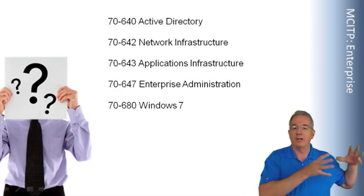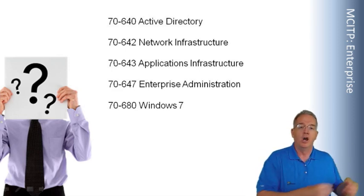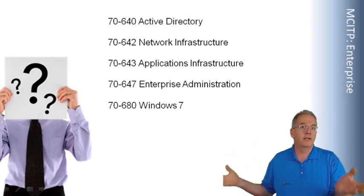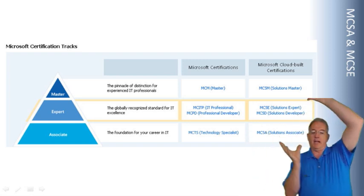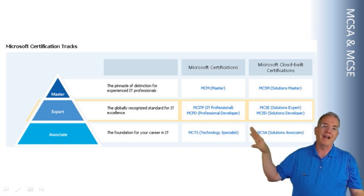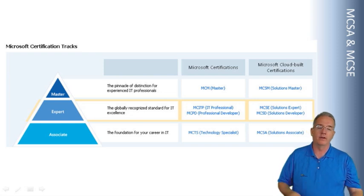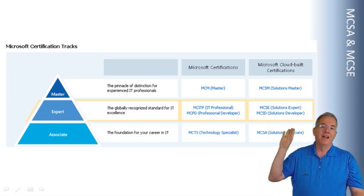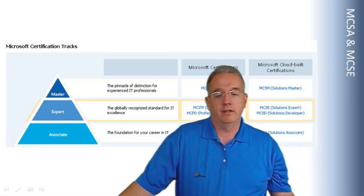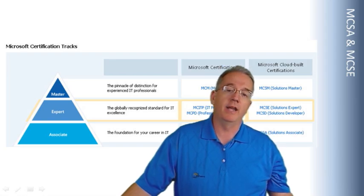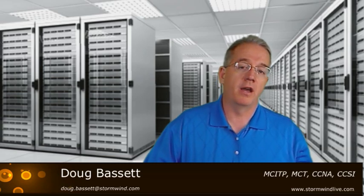The process for MCSE is really covering cloud computing in an enterprise environment, whereas MCITP Enterprise covers the rest of your infrastructure in an enterprise environment. When you look at Microsoft's comparison between MCITP and MCSE, you'll notice they're both considered expert level — above that you have Master, but then you need oral boards. So one is Enterprise Infrastructure, the other is Enterprise Infrastructure with cloud computing and System Center.